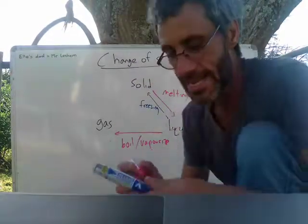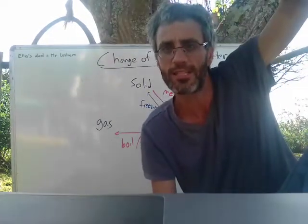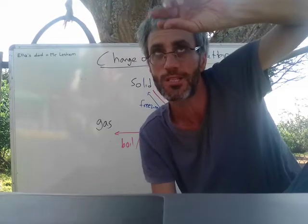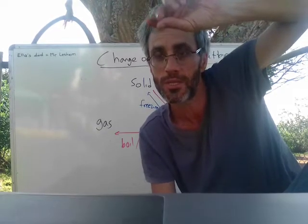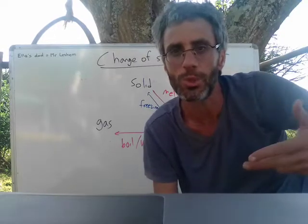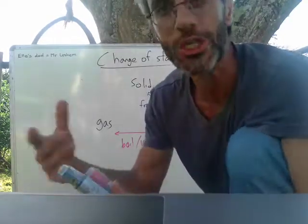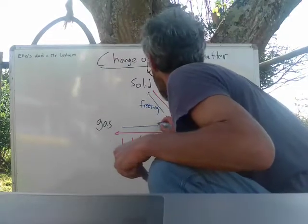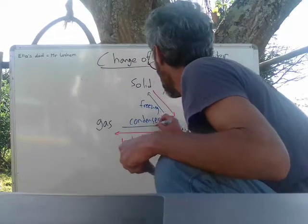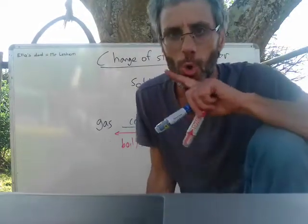Now if I take gas — let's say steam coming up from a kettle — and I put a little metal tray on it, you'll see little drops form; it becomes liquid again. What's the word for that? Condensation, or condenses. Most of you have probably heard of all these words.